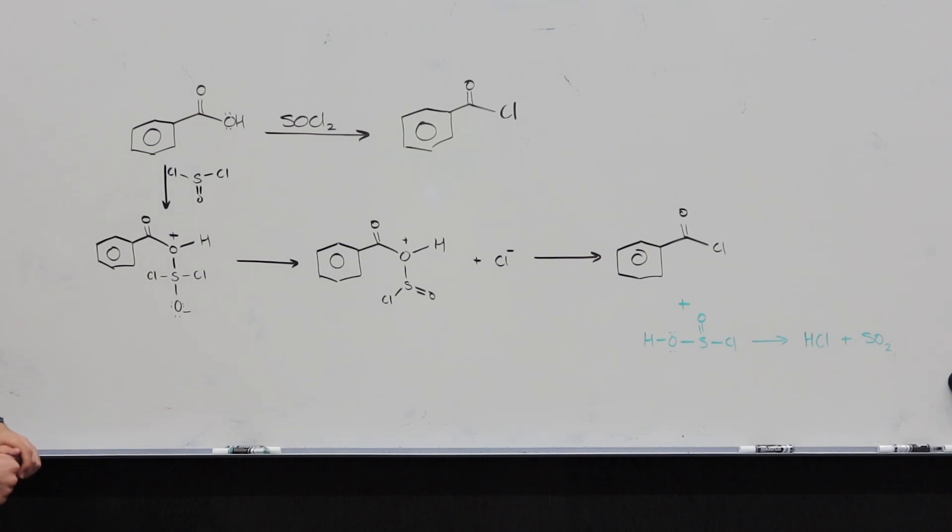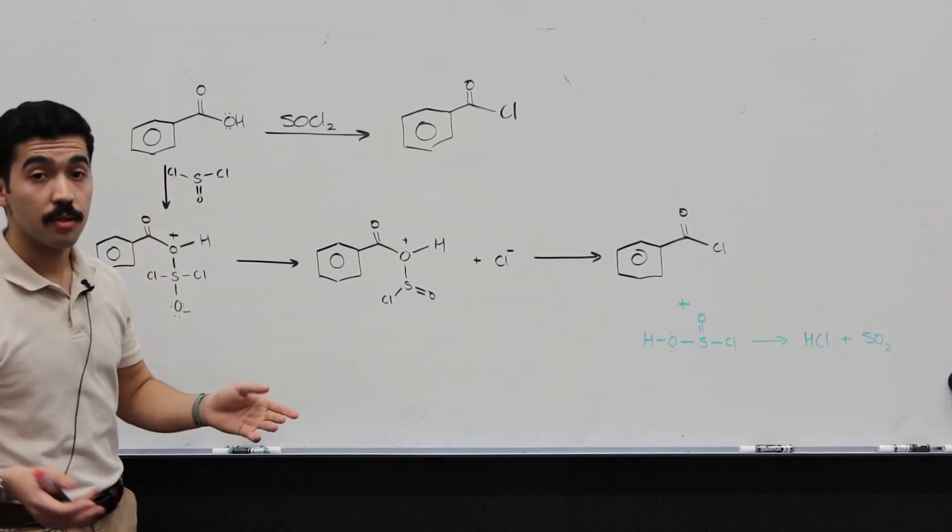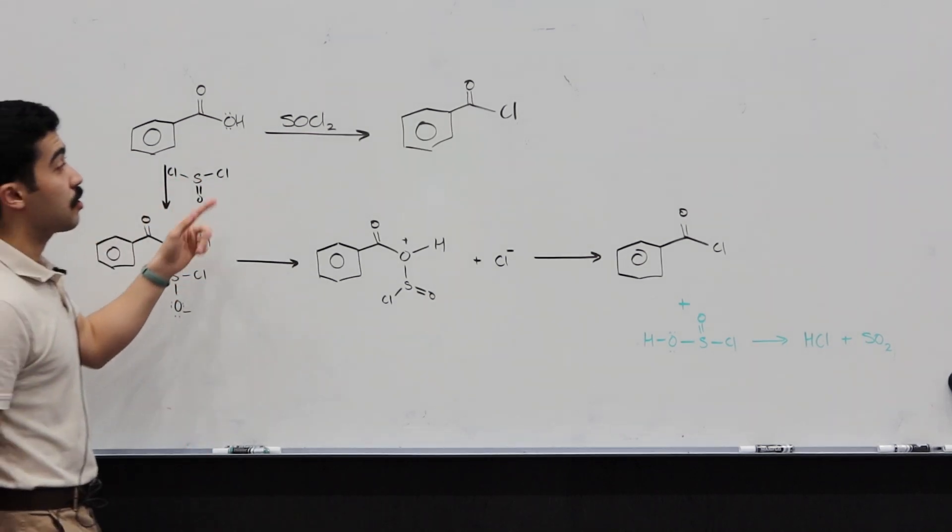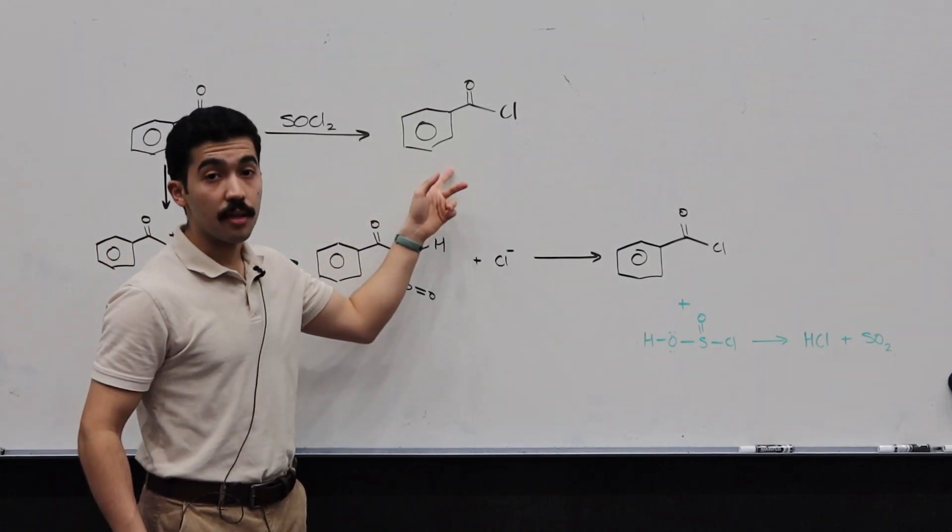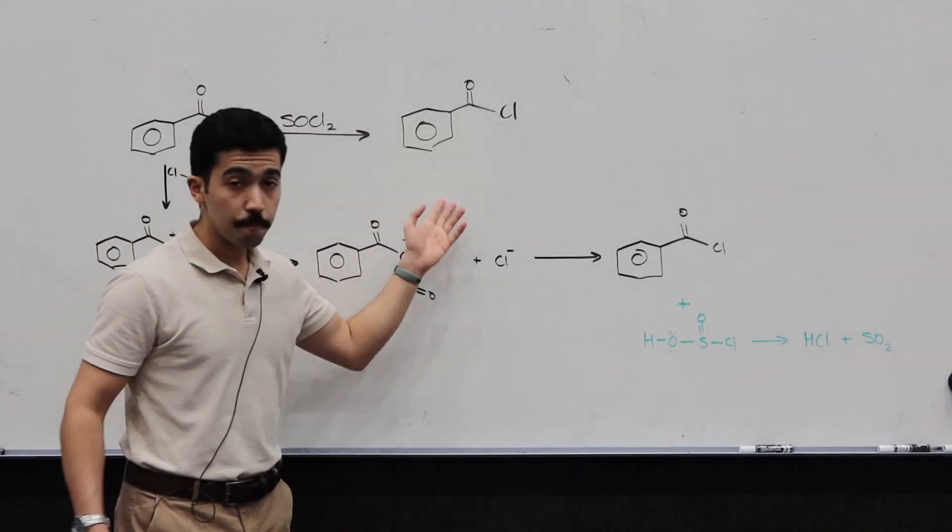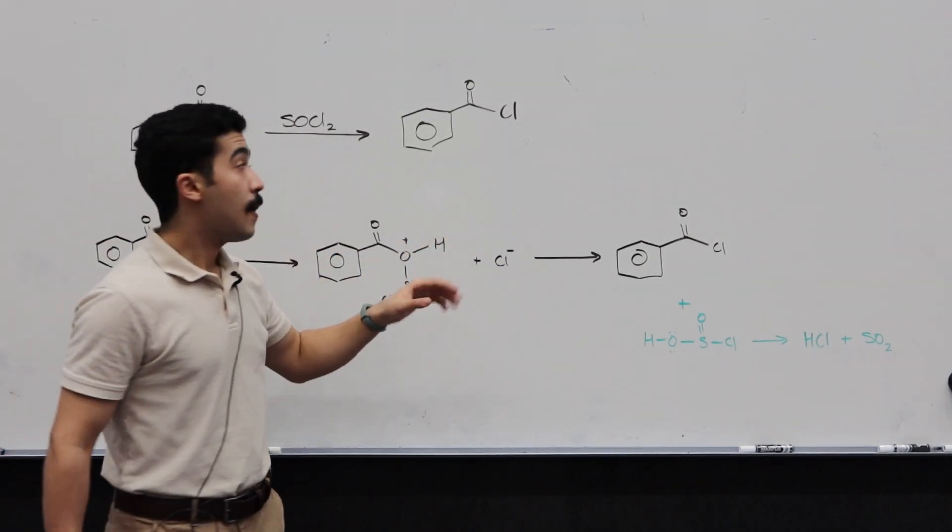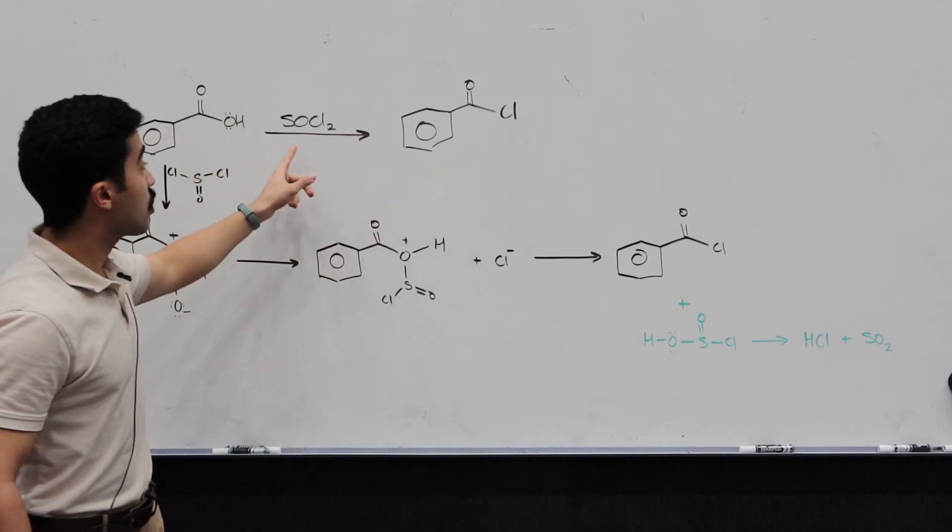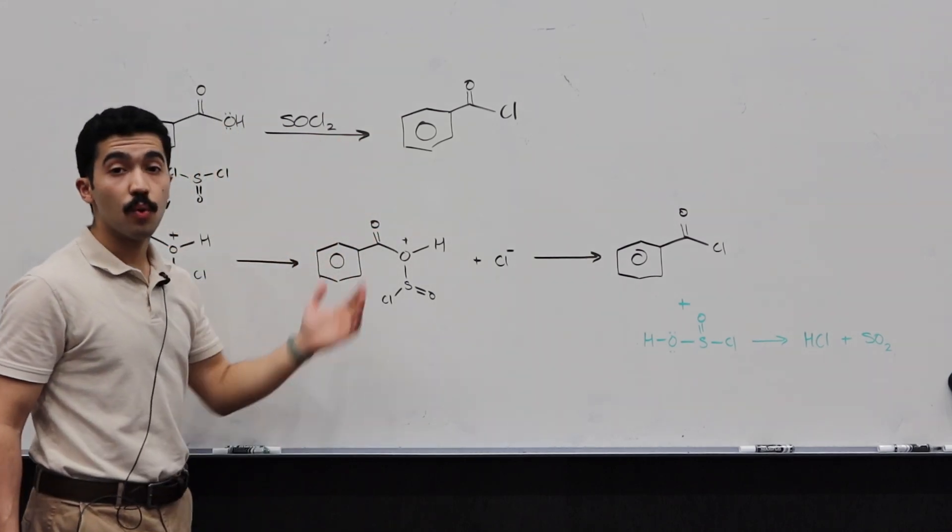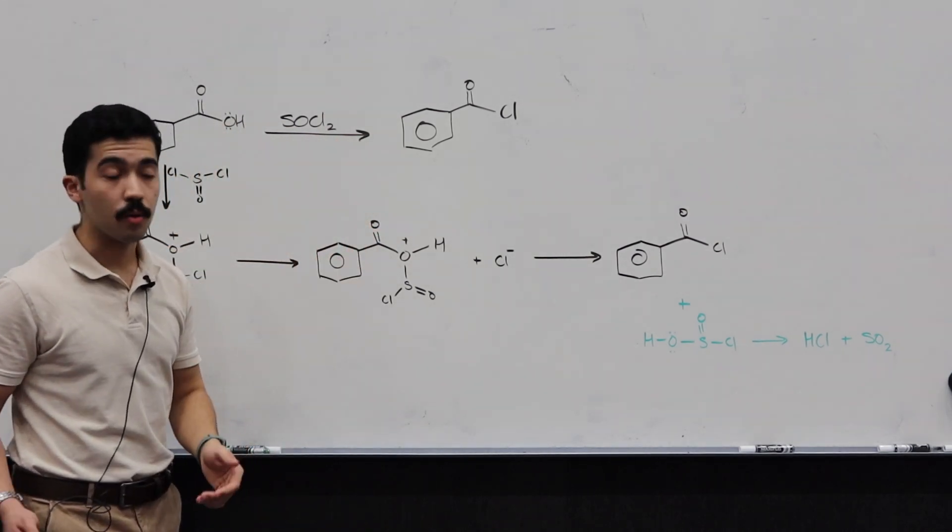So the first one here is we're looking at converting a carboxylic acid, in this case benzoic acid, to an acid halide, in this case an acid chloride, or benzoyl chloride. And what we want to do is we're using the reagent SOCl2, or thionyl chloride.